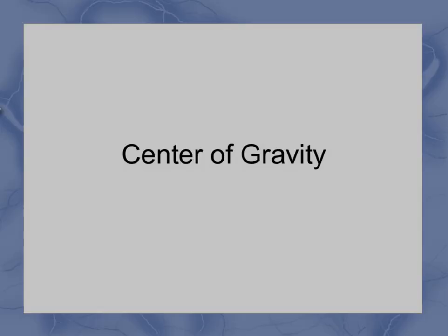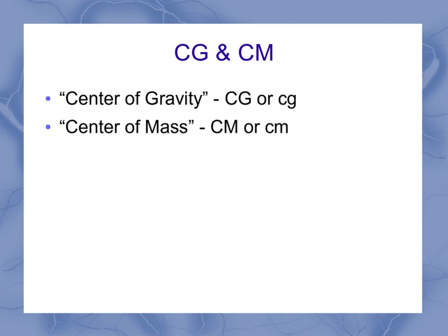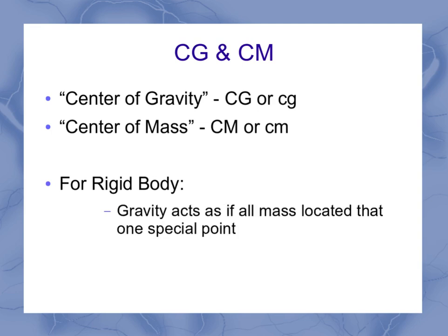Now we're going to look at center of gravity. I've got two terms here: center of gravity, abbreviated CG, and center of mass, abbreviated CM. We use capital letters to avoid confusion with, say, centimeters for center of mass. For our purposes in general physics, center of mass and center of gravity are interchangeable terms. In some advanced classes there might be a subtle difference. We're going to use these in the context of rigid bodies, where gravity acts as if all the mass is located at that one special point we call the center of mass or center of gravity.